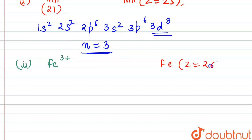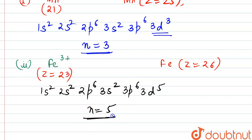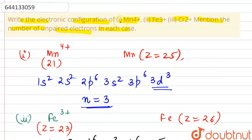So configuration would be 1s² 2s² 2p⁶ 3s² 3p⁶ 3d⁵. So here we can see unpaired electrons in 3d orbital: 5. That is the answer.